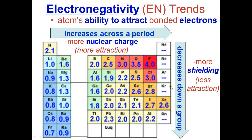As we go down a group, because there's more shielding, there is less force on other electrons. It's harder to pull in an electron when you already have so many rings, because the rings block the force.